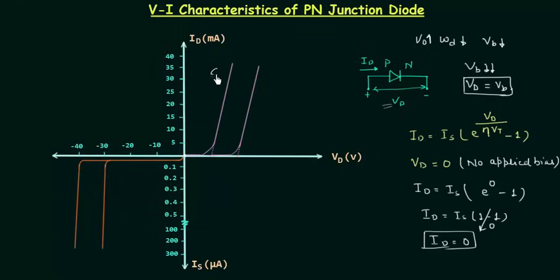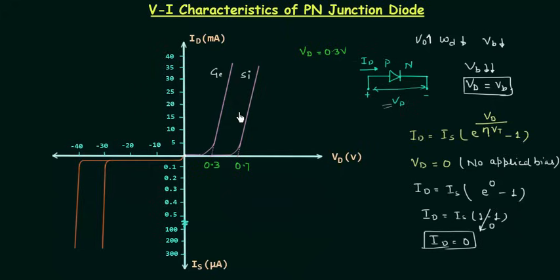This plot is for germanium and this one is for silicon. In the case of germanium, the barrier potential is 0.3 volts, and for silicon it is 0.7 volts. So for germanium, when Vd equals 0.3 volts — equal to the barrier potential — there is a flood of electrons crossing the junction and current increases rapidly. If Vd is increased further, the current increases exponentially. Similarly for silicon, when Vd is greater than or equal to 0.7 volts, we have a generous flow of current through the diode.